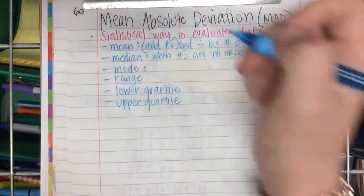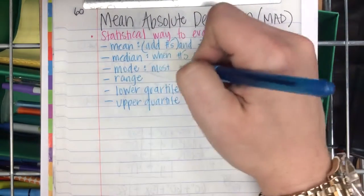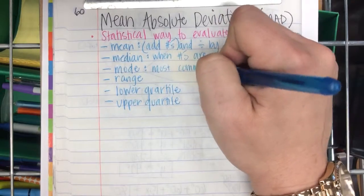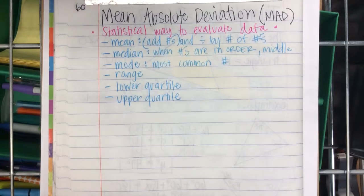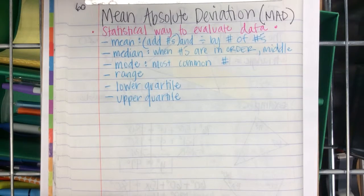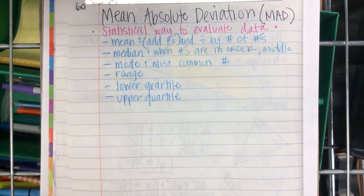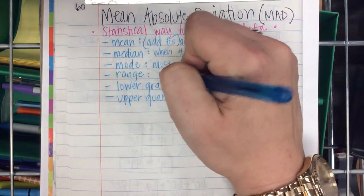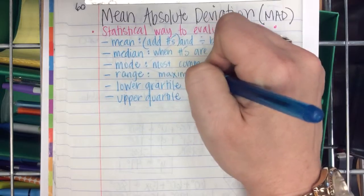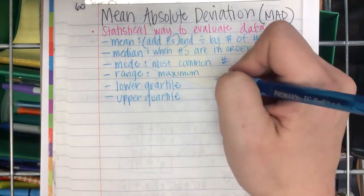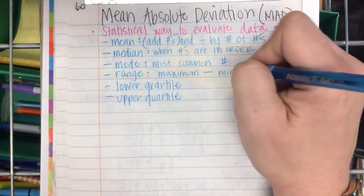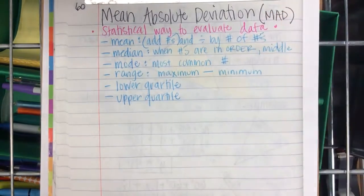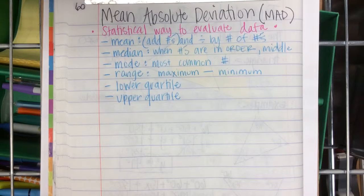The mode is the most common number. The range is the maximum, what does that mean? Biggest number, greatest number, minus the minimum. What does that mean? The smallest, the least.